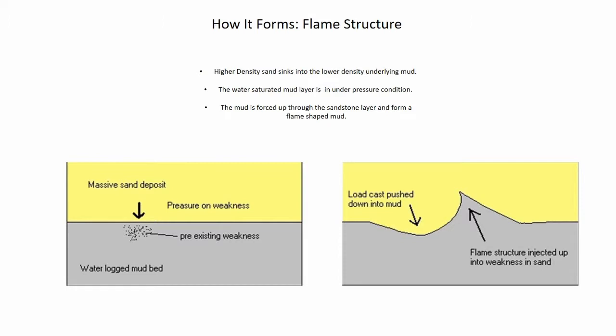The mud layer is under high pore pressure. This causes the high density sand layer to force the sand into the underlying mud. As a result, the mud forces up through the sandstone layer and forms a flame structure.